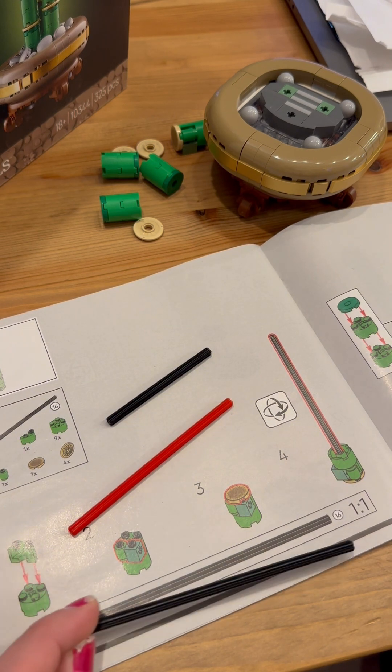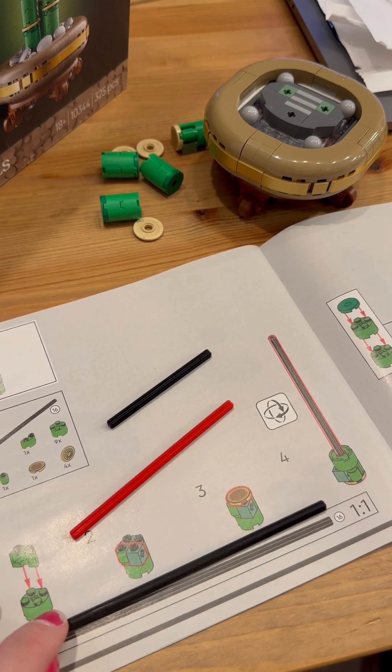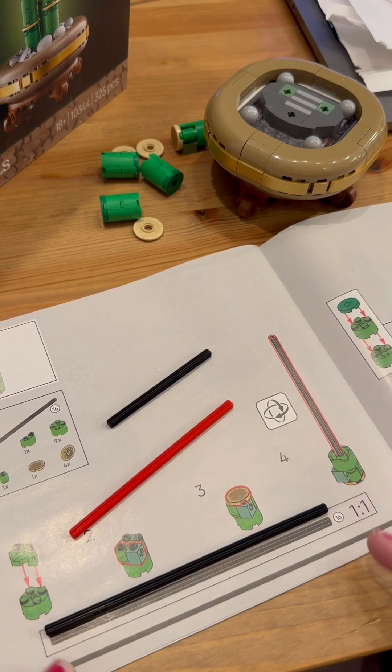So for step 29, it's showing us that we use number 16 axle. If you lay this over it, you'll see it's the right length.